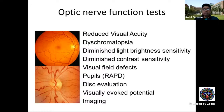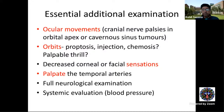Key presentations include reduced visual acuity, dyschromatopsia, decreased light/brightness sensitivity, decreased contrast, various field defects, pupil abnormalities, and RAPD. Disc evaluation, visual evoked potentials, and imaging together form the optic nerve tests for assessment of optic nerve functions.